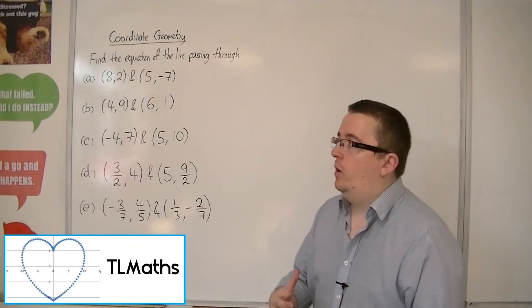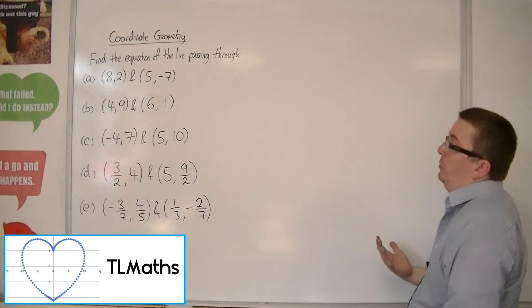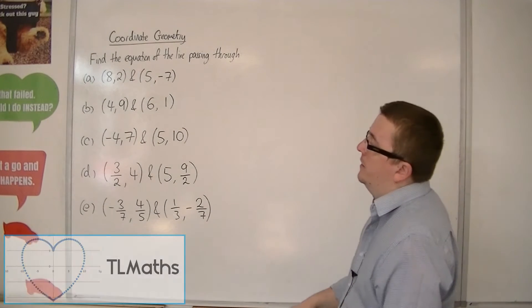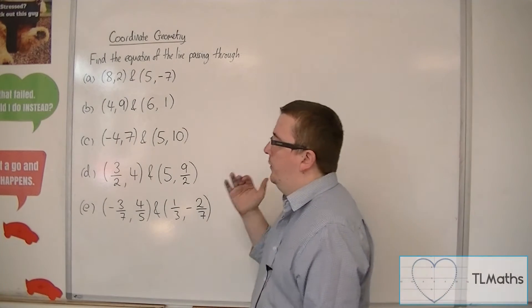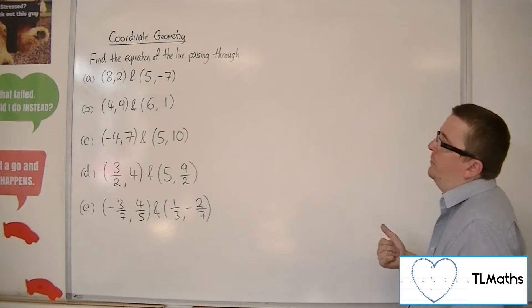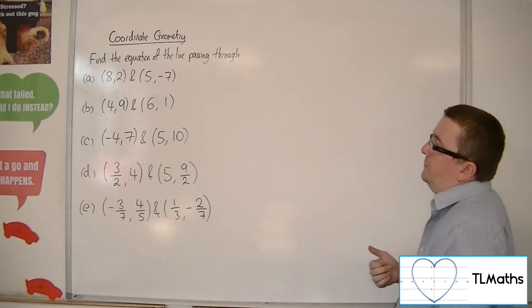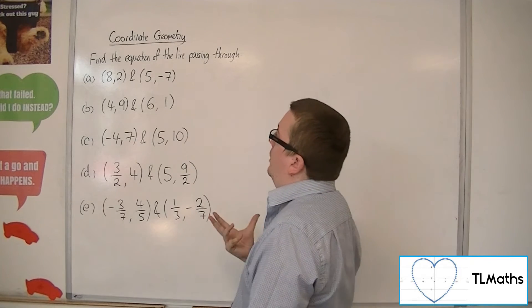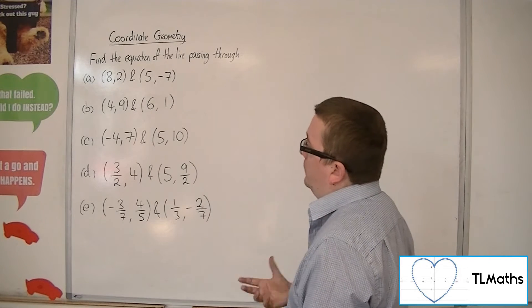In this video, I'm going to work through some examples of finding the equation of the line that passes through these pairs of coordinates. So, first one: (8, 2) and (5, -7).